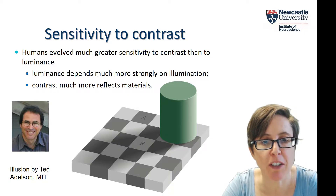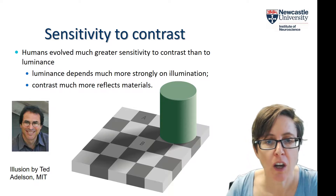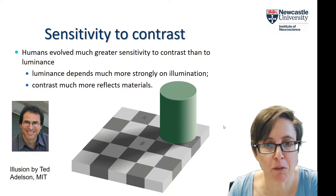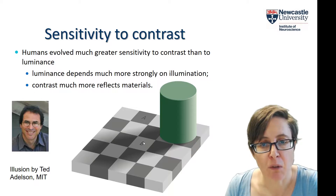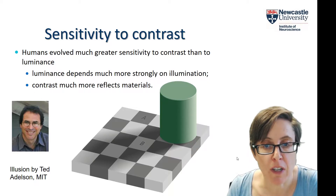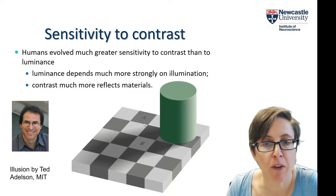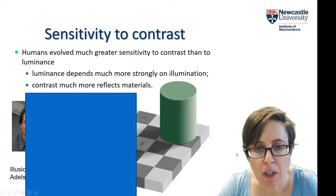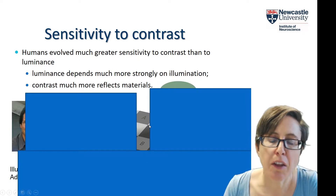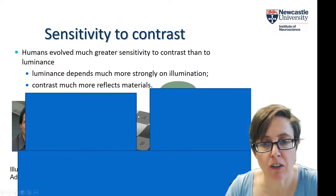Ted Adelson at MIT came up with a really beautiful illusion which demonstrates the insensitivity of the human visual system to luminance. In this checkerboard illusion, which you may have seen before, the cool thing is that the squares labelled A and B actually have the same luminance on the screen — the pixel values are the same for A and B. If I cover these regions of the image up like that, it's much easier to believe that these two patches are in fact the same luminance.